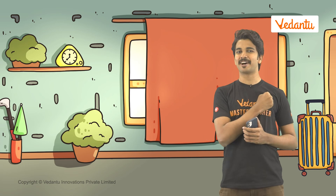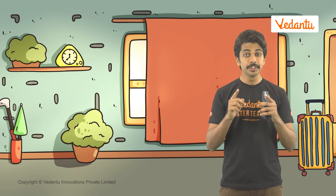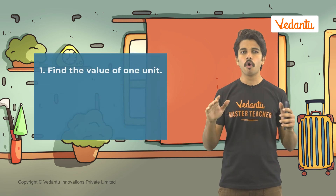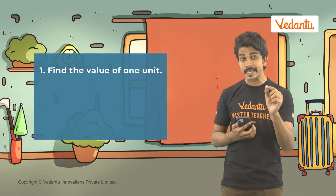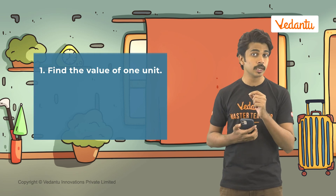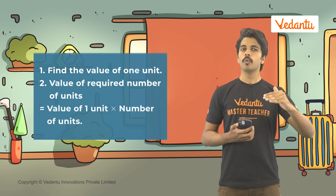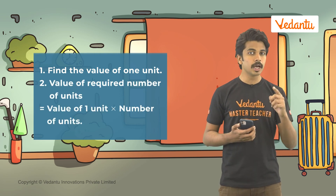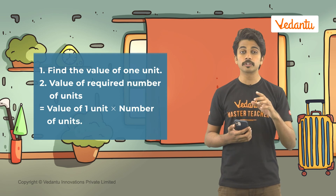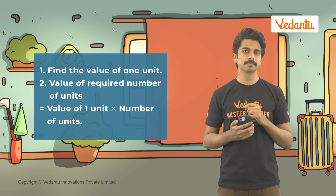That was fun! Thanks for the help. Let's look back at what we have learned today. The Unitary Method is all about finding the value of a single unit, and then we multiply the value of a single unit with the number of units to find the required value.